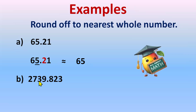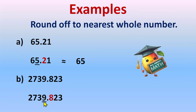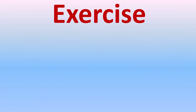For part b, round off 2739.823 to the nearest whole number. Underline the ones place, which is nine, and check the tenths place — that is eight. Eight is a strong number, so add one to nine. Nine plus one is ten, so nine becomes zero and one is carried over. 39 becomes 40, making the rounded off value 2740.